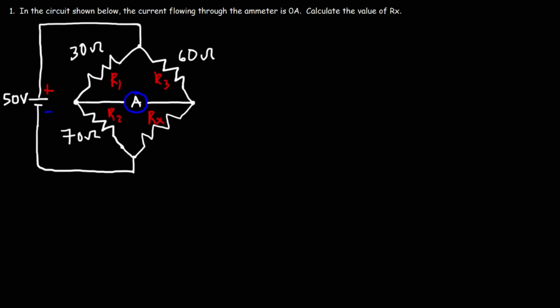So what we have is a Wheatstone bridge circuit. This circuit is very useful for measuring very low values of resistance. So in this example, we need to calculate Rx. Now the current flowing through the ammeter, which let's call it IM, is zero amps.